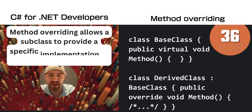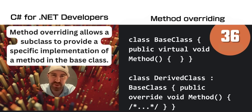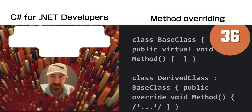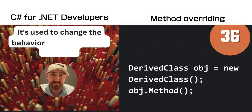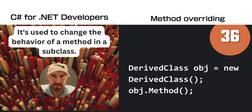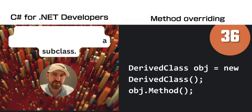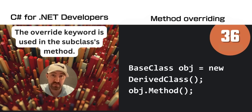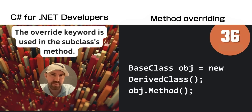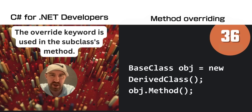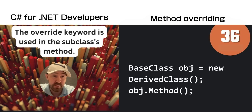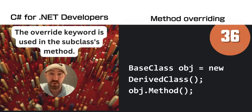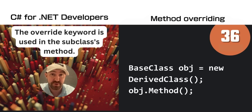Method overriding allows a subclass to provide a specific implementation of a method in a base class. In this example, the overridden version of the method is called from the derived class. Even though the variable type declaration is base class, because we've instantiated a new derived class, the new method version is used.